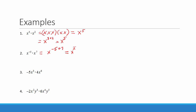Our next example has coefficients in front of the x's. We multiply the coefficients together and add the exponents on the like bases. We multiply negative 5 times 4, which equals negative 20. Then we add the exponents: x to the 3 plus 6. So our answer is negative 20 x to the ninth.